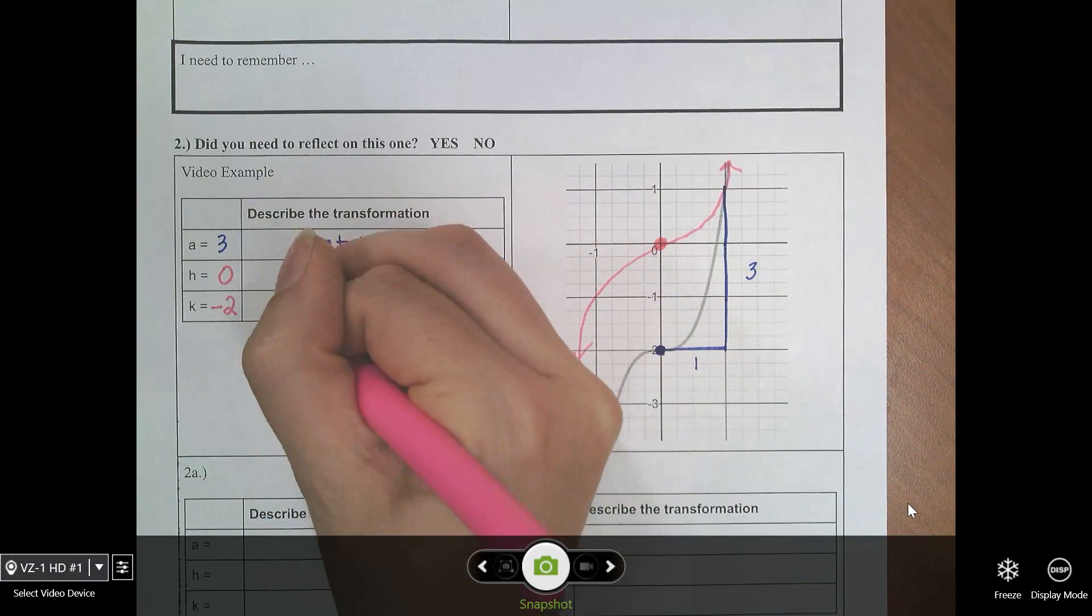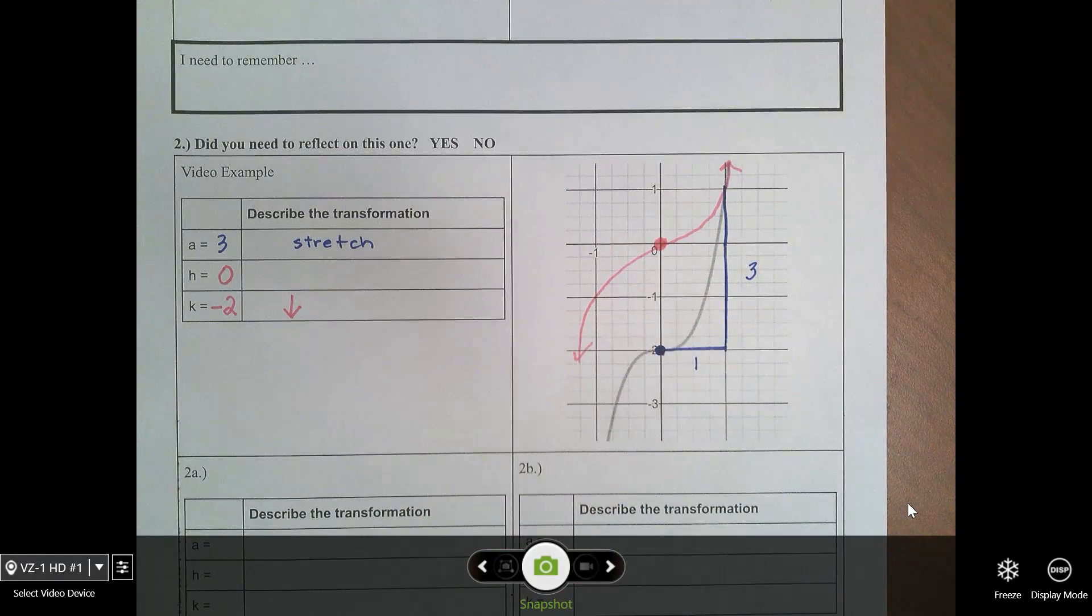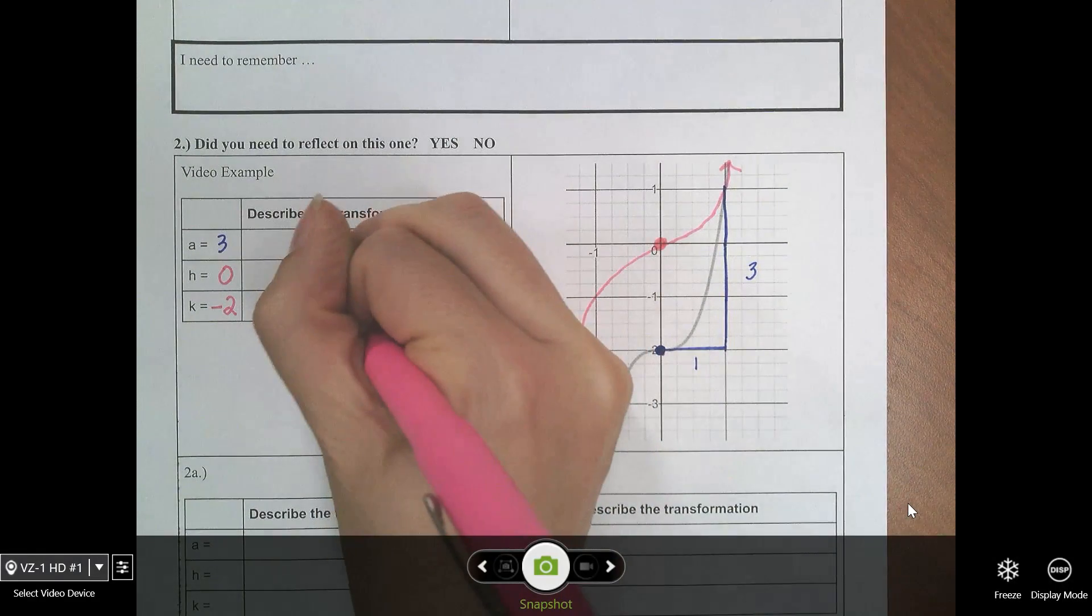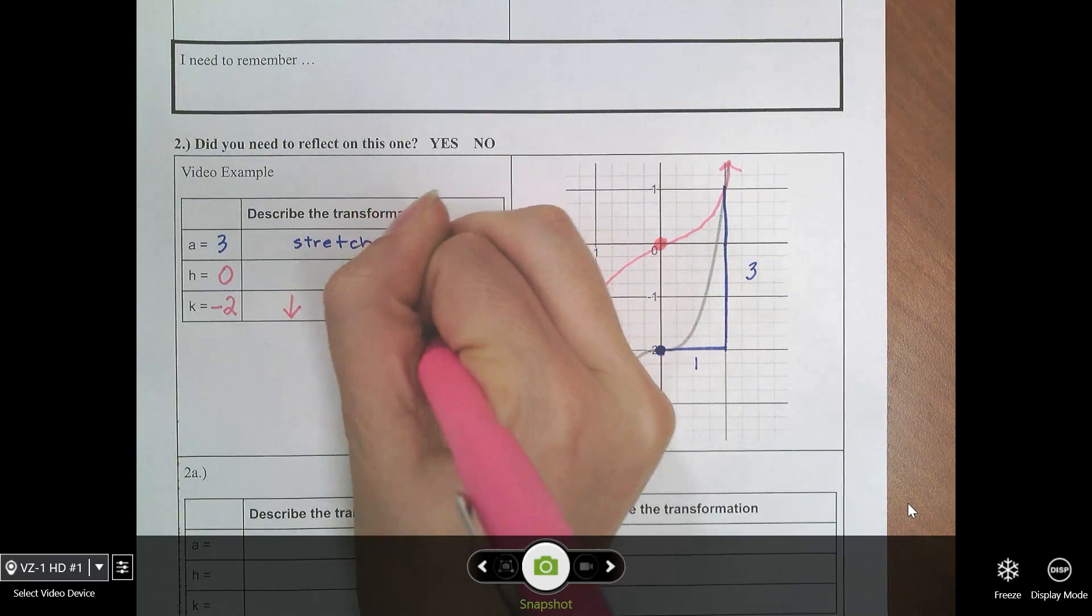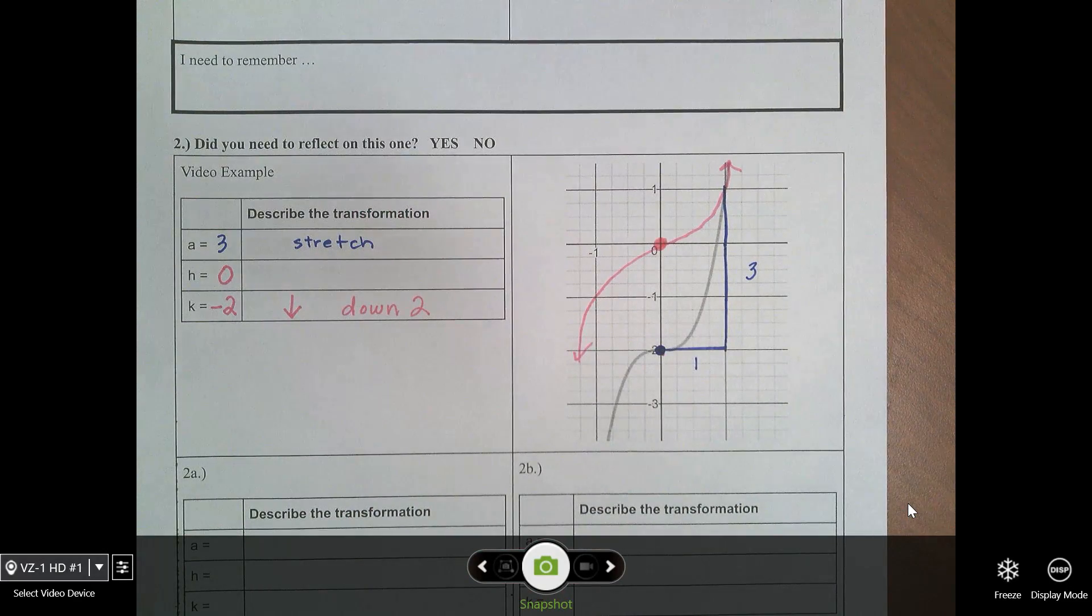So, the only thing we have is just down two, if you prefer to write down two. So, now we've described a, h, and k from a graph. Now it's your turn.